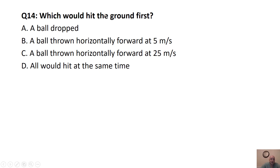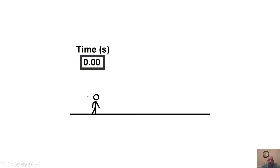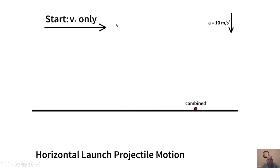Which would hit the ground first? If a ball was dropped or thrown horizontally from the same height — whether dropped, thrown at 5 m/s, or thrown at 25 m/s — they would all hit the ground at the same time. This animation shows that if dropped from the same height, it takes 0.76 seconds; if thrown a little faster, still 0.76 seconds; even faster, still 0.76 seconds. That will be the same no matter what. That's where we end this lesson — in the next lesson we'll go through the projectile motion math.